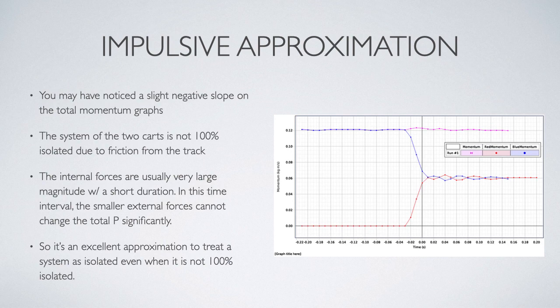If you look at this graph, this is just the first graph repeated here, you might notice that the total momentum line has a very, very slight negative slope. And the reason for this is it could not completely exclude all external forces from the system. Namely, there's a small amount of rolling friction between the cart's wheels and the track.